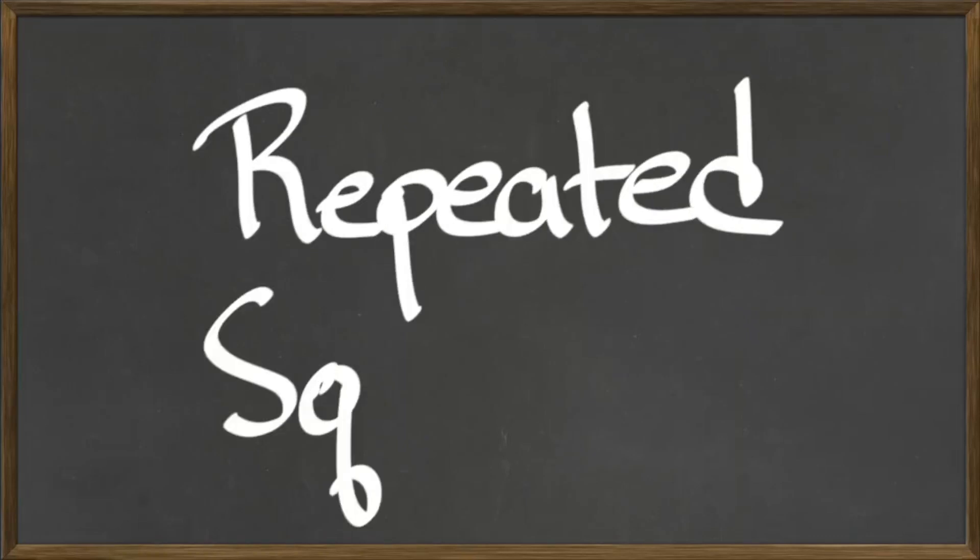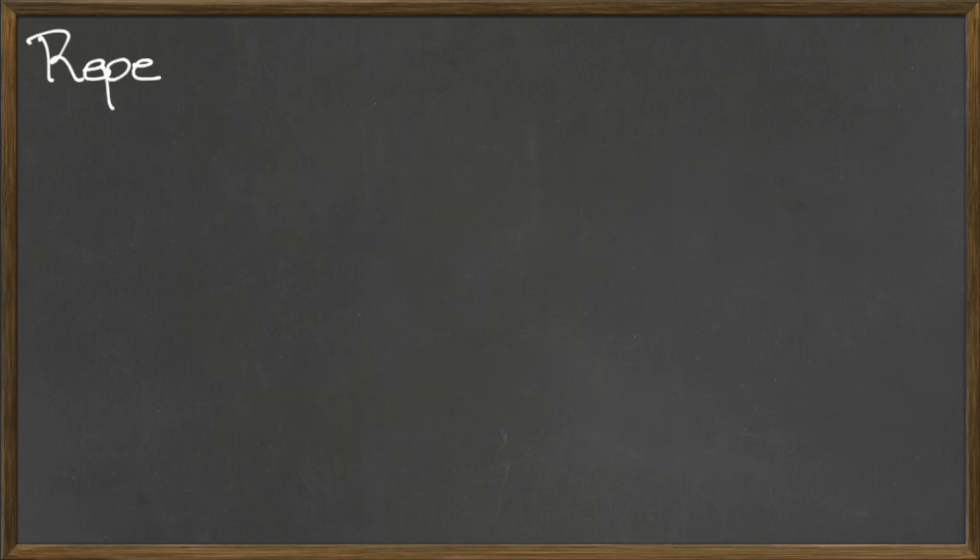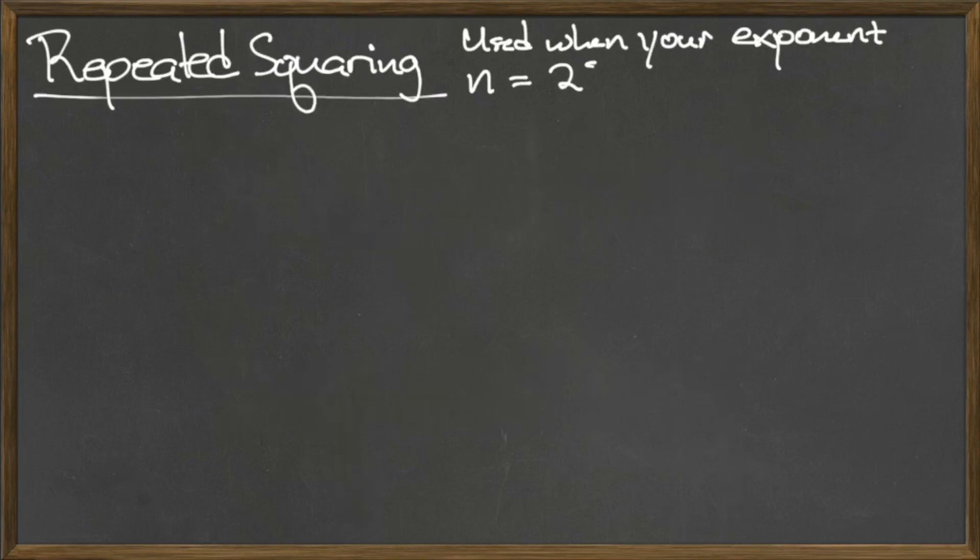In this video we will discuss repeated squaring. Repeated squaring is similar to the process of group exponentiation, but is useful when your exponent n is a power of 2, here represented by n equals 2 to the s for some non-negative integer s.